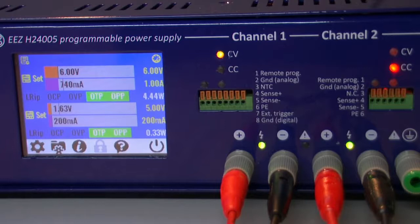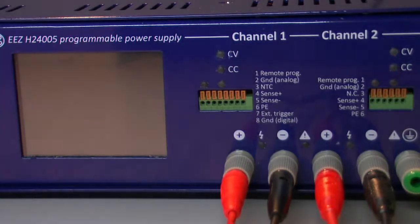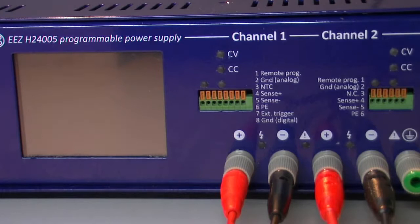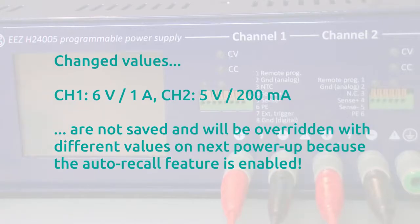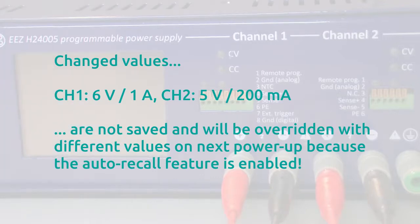But if for any reason power is switched off due to some blackout or I've just decided to switch it off, in the next power cycle if I go back with a profile which has 10V and 1A instead of 6V and 200mA on the second channel...